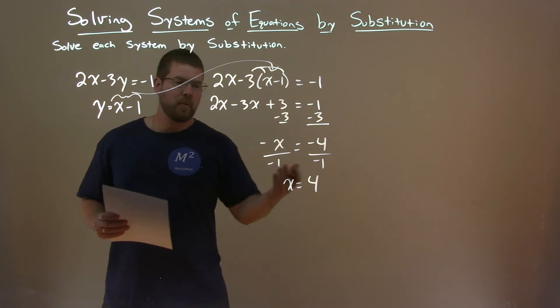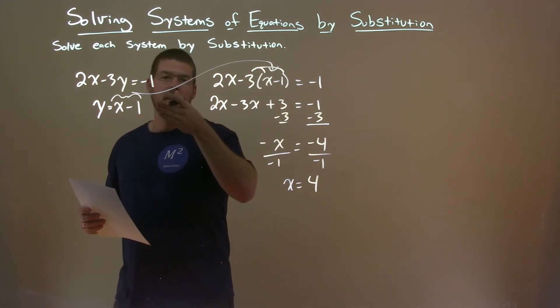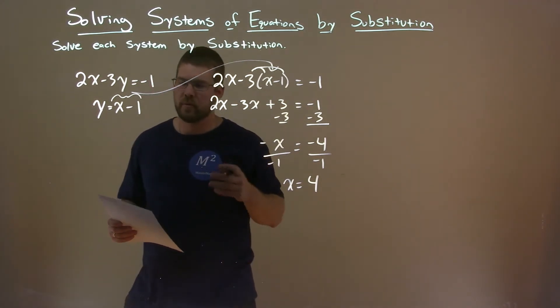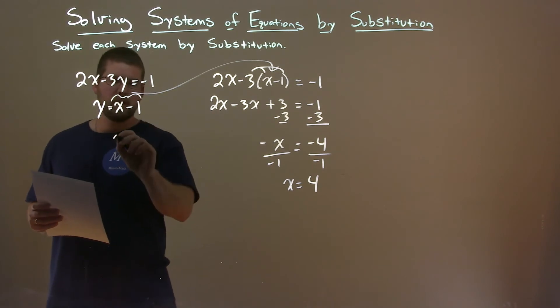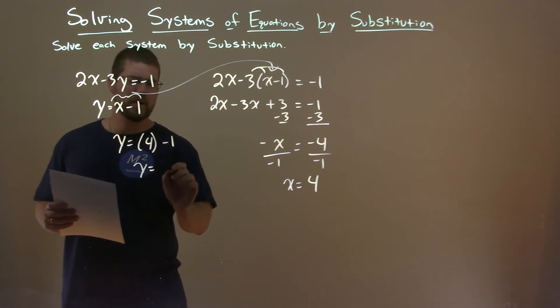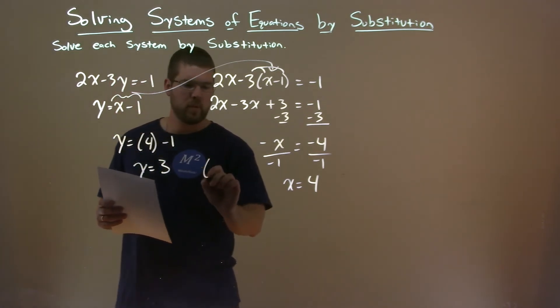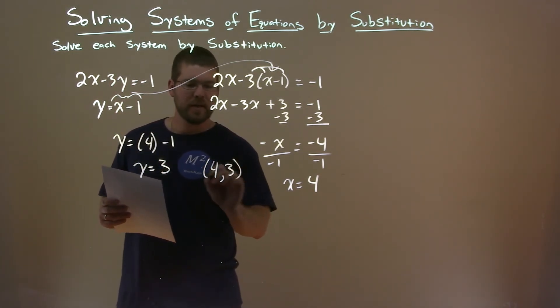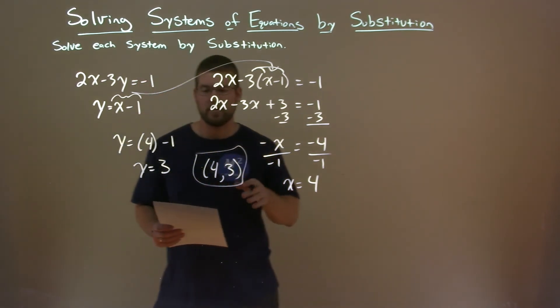We take that information and we want to plug that into one of our original equations, find the easier one, second equation. So y equals 4 minus 1, and 4 minus 1 is 3. So our coordinate point is 4 comma 3, and that is our final answer.